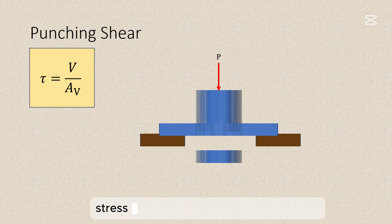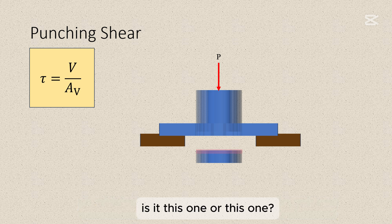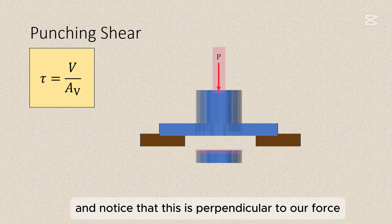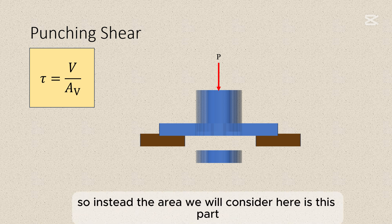Now let's recall that shear stress involves areas parallel to the force. Now if you look at the cut portion, which part of this is subjected to shear stress? Is it this one or this one? Notice that it will not be this one anymore. It's not the circular area. Because this is our P and notice that this is perpendicular to our force. So we are not interested in that. Perhaps we could be interested in that if we want the axial stress experienced by the punch. So instead, the area we will consider here is this part.